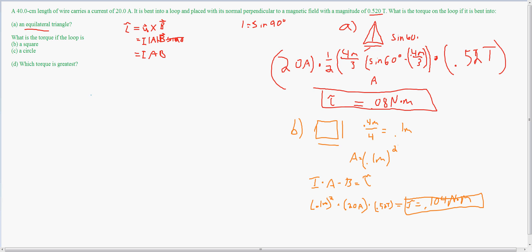And now for part C, a circle. For a circle, we are going to need to find the area. So what I'm going to do is set the circumference equal to 0.4 meters, because that's the length of the wire which is being bent into a circle.